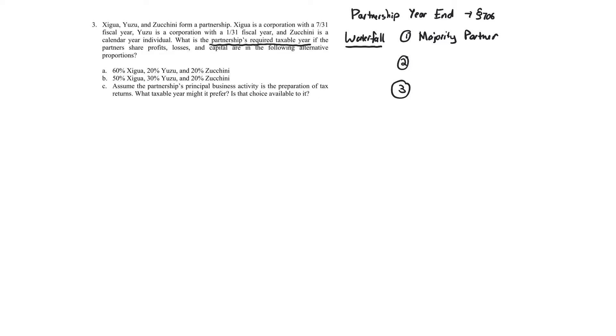The first level is called the majority partner test. In a waterfall rule, you test whether you meet the criteria. If you meet the criteria, you stop and apply that rule. If you don't meet the criteria, you continue on. So the first test: if more than 50% of the owners of the partnership — capital and profits — have the same year end, you use that year end.